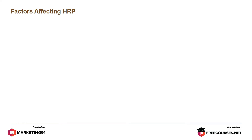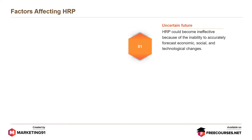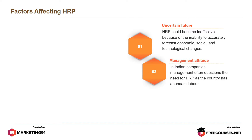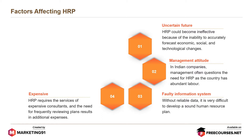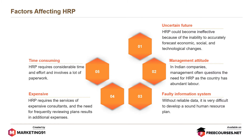Factors affecting HRP include: uncertain future — HRP could become ineffective because of the inability to accurately forecast economic, social and technological changes; management attitude — in Indian companies, management often questions the need for HRP as the country has abundant labor; faulty information system — without reliable data, it is very difficult to develop a sound human resource plan; expensive — HRP requires the services of expensive consultants and frequently reviewing plans results in additional expenses; and time consuming — HRP requires considerable time and effort and involves a lot of paperwork.